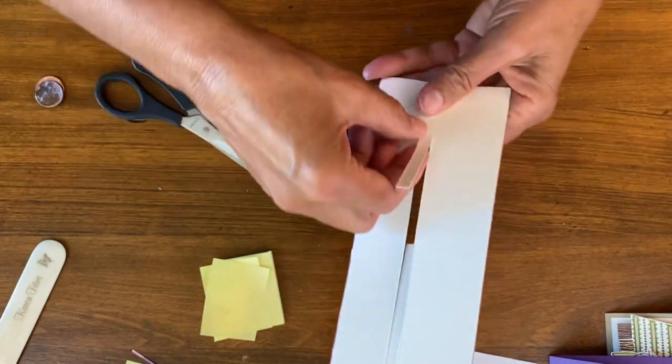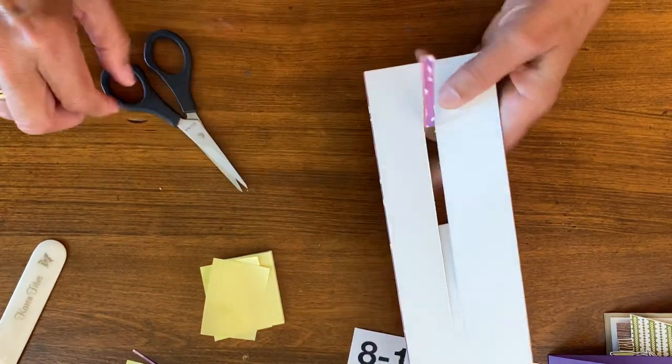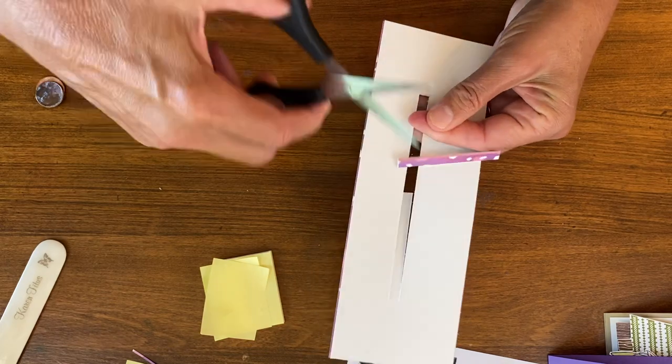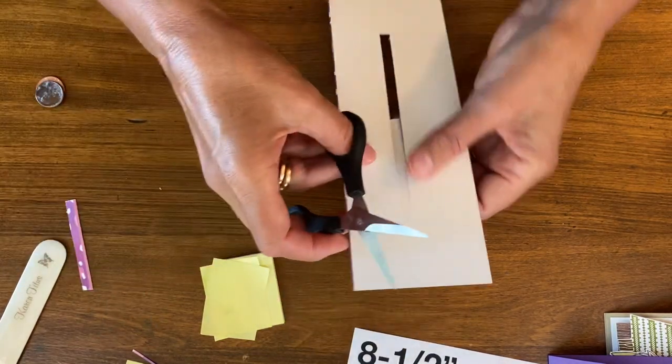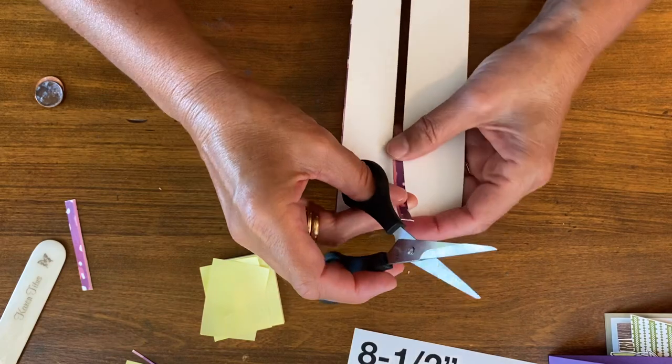Put a slit right here. Now I'm just going to fold these way back, cut it off. Fold this one way back.